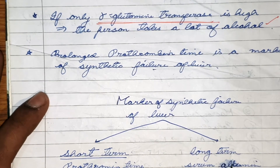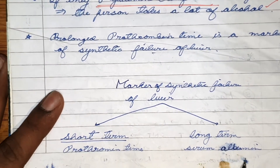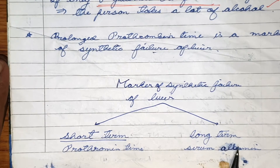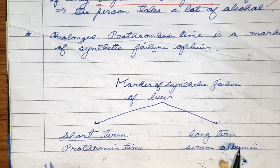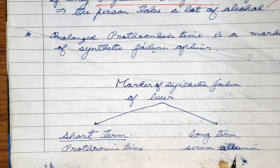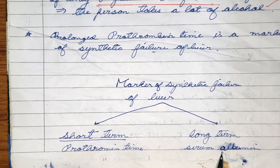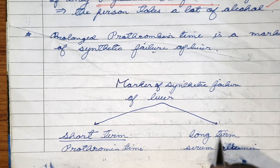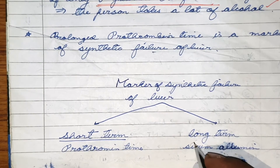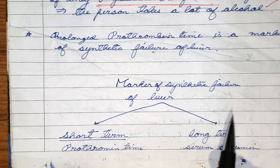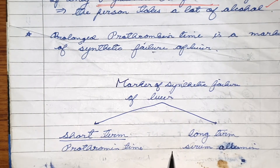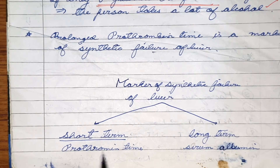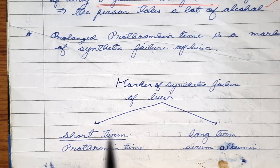Serum albumin has a half-life of 25 days. So if you see a patient with yellow discoloration of the skin and check only the albumin level, it may appear normal and you might think he doesn't have jaundice. But remember the half-life of 25 days — you should check the prothrombin time to conclusively determine whether the person has jaundice.